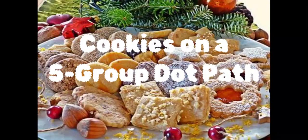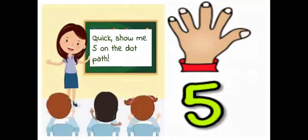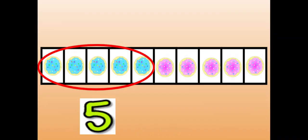This fluency is called cookies on a five-group dot path. Show me five on the dot path. Check your answer. I circled five on my dot path. I remembered that the colors of my cookies changed colors at the number five.